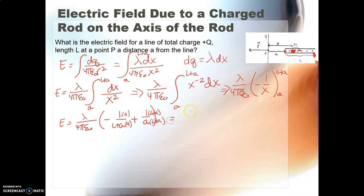And so we get our constants here, λ over 4πε₀. And then we have on the top here, we have a negative a plus L plus a, right? There's our negative a, and there's our L plus a, and that's all over a times the quantity L plus a.